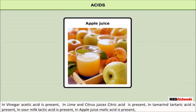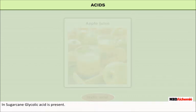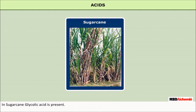In apple juice, malic acid is present. And in sugar cane, glycolic acid is present.